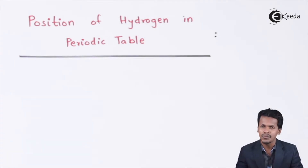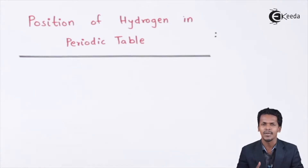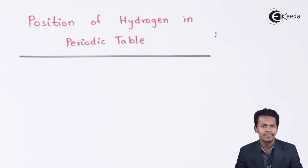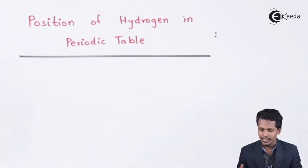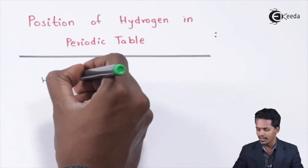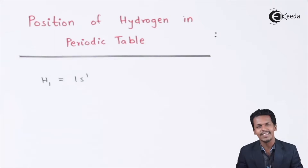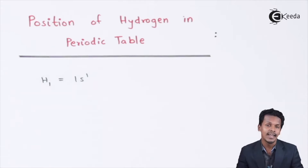For instance, sodium has its last electron entering the s-orbital, so it belongs to the s-block. For carbon, it is a p-block element. But what about hydrogen? Hydrogen has an atomic number of 1, so its electronic configuration is 1s1. Since the only electron enters the s-orbital, we could say it is an s-block element.